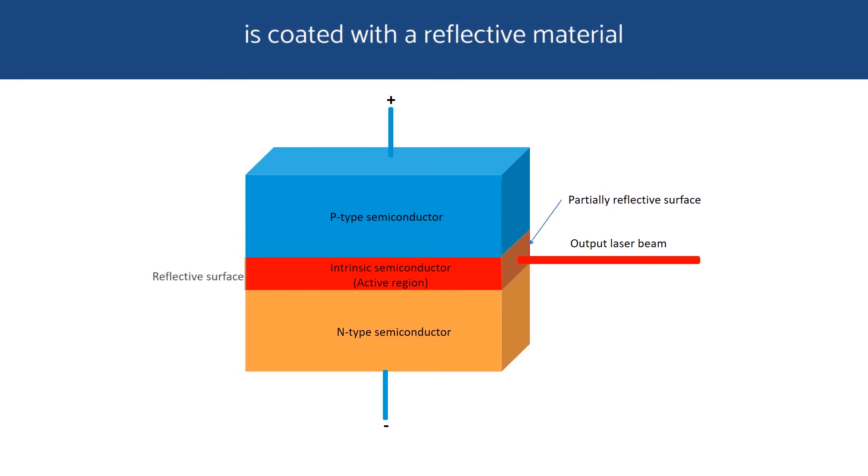One end of the active region is coated with a reflective material that will reflect light into the active region. The other surface is coated with a partially reflecting material, so that a percentage of light is reflected in the active region, while another percentage of light is transmitted. This arrangement forms a Fabry-Perot resonator that can form standing waves of light, a condition for lasing.